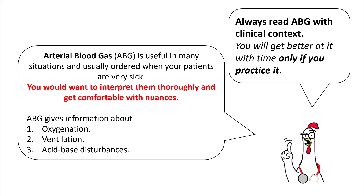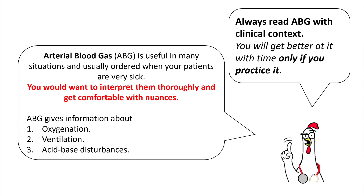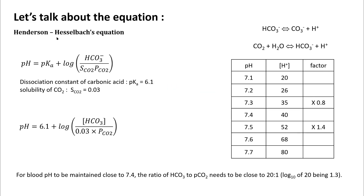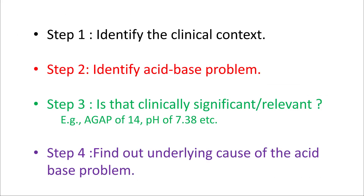ABG is useful in many situations and is usually ordered when your patients are very sick, so you would want to interpret them thoroughly and get comfortable with the nuances. A lot of videos talk about very basic concepts — in this lecture we will go into more detail. ABG gives information about oxygenation, ventilation, and acid-base disturbances. Always interpret ABG in clinical context. While understanding the Henderson-Hasselbalch equation is important for deeper understanding, it is not a prerequisite for this lecture.